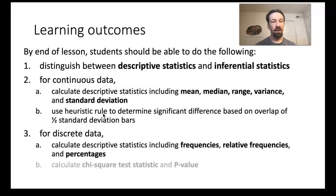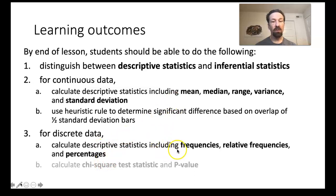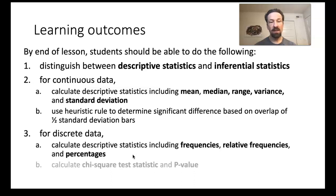For discrete data—data that falls into categories—you should also be able to calculate descriptive statistics, including frequencies, relative frequencies, and percentages. In a follow-up lesson, you will also learn how to calculate chi-squared test statistics and p-values.